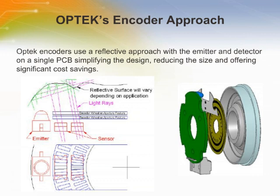A light beam interrupted by a rotating code wheel is the essence of an optical shaft encoder. The light beam produced by an LED is transmitted through a code disk with an alternating opaque and transparent pattern. The code disk is fixed on the motor shaft. Small sensors like phototransistors or photodiodes measure the light modulation.